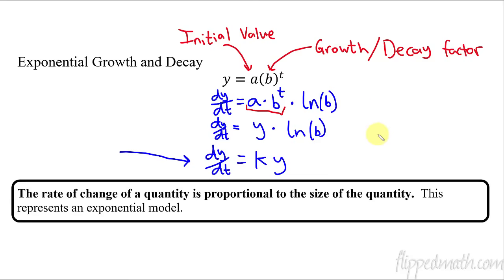And how do we know if it's growth or decay? If k is greater than 0, in this case, so if this k is positive, then it is an exponential growth. And if k is less than 0, you guessed it, then it would be exponential decay. So, when this thing's negative, it's an exponential decay model.